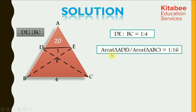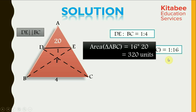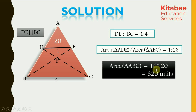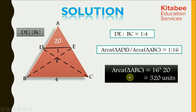Area of triangle ABC would be 16 times the area of triangle ADE. So, area of triangle ABC would be 16 into 20, which comes out to be equal to 320 units. The area of the entire triangle ABC is equal to 320 units, and so the first part is completed.